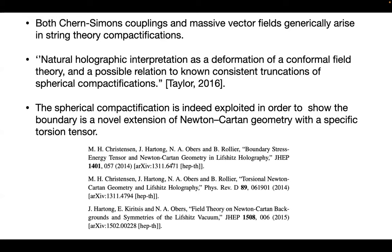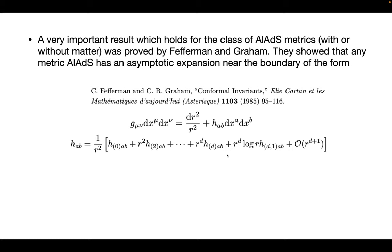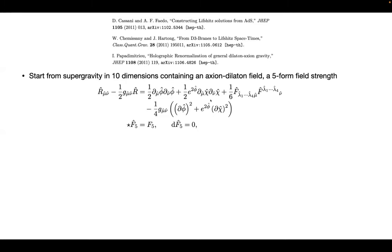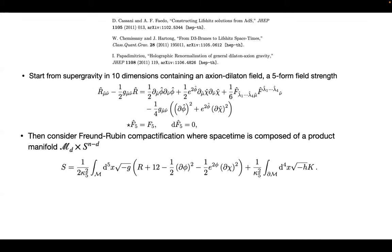One more thing about Lifshitz: normally for AdS you can use the Fefferman-Graham expansion, where you have an asymptotic expansion near the boundary and you can use this expansion to relate vacuum expectation values, energy stress tensor, and conformal anomalies. But the bad thing about Lifshitz is you don't have this, so you cannot use the Fefferman-Graham expansion. Because of that, you have some trouble defining the quantities. What these groups used is they basically start with a ten-dimensional supergravity action and reduce it — in these three papers, they reduce it by using a Scherk-Schwarz compactification — to a five-dimensional model.